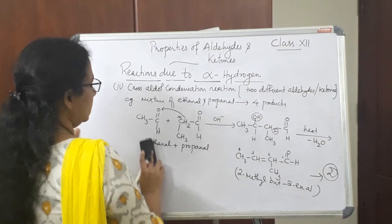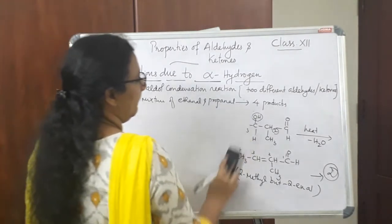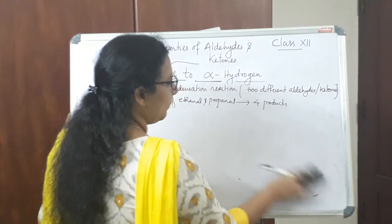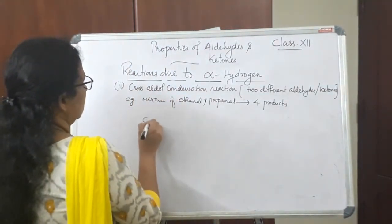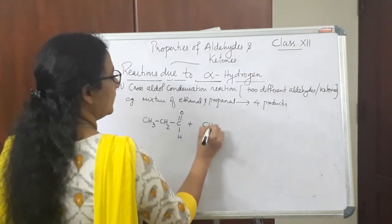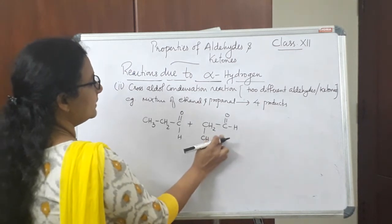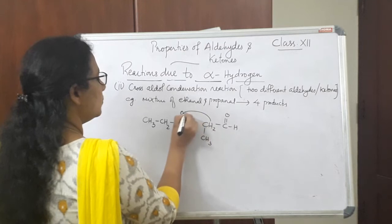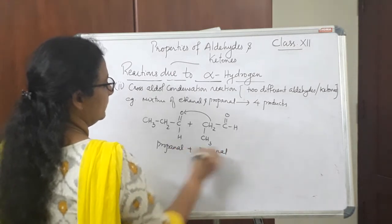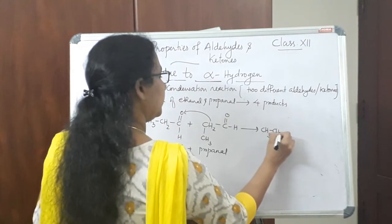Now let us write the third product, formed from propanal and propanal. Both molecules have alpha hydrogen atoms. We take propanal plus propanal: CH₃–CH₂–CHO plus CH₃–CH₂–CHO. The second molecule is written so that it is easy to move the alpha hydrogen towards the carbonyl carbon of the first propanal molecule.